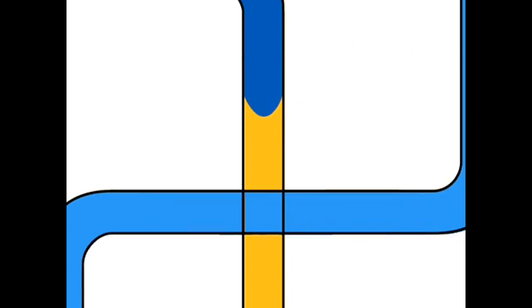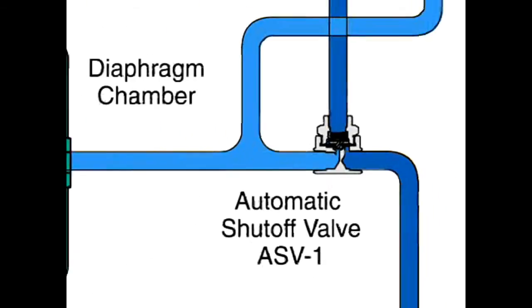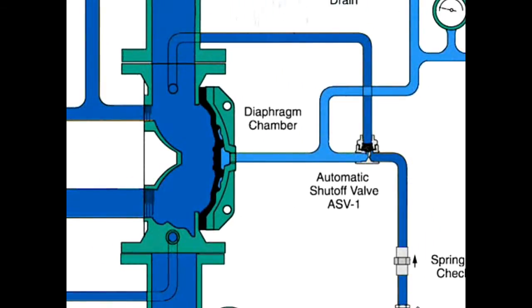Water also passes through the trim to the automatic shutoff valve to close this valve. Once closed, it will prevent the diaphragm chamber from becoming inadvertently re-pressurized.